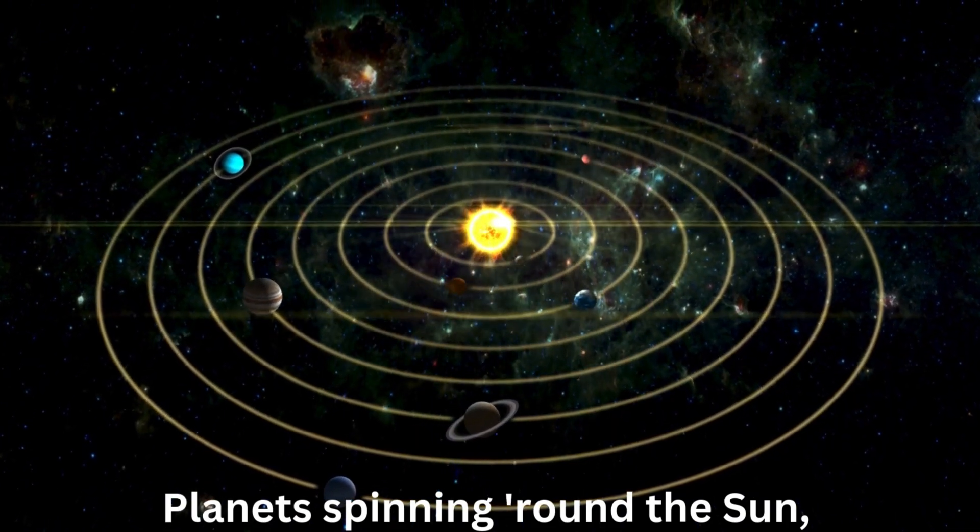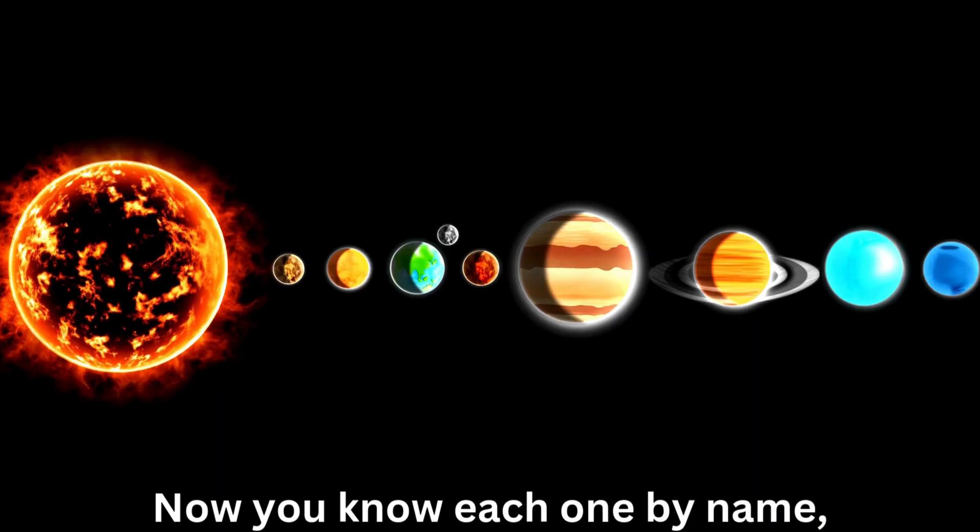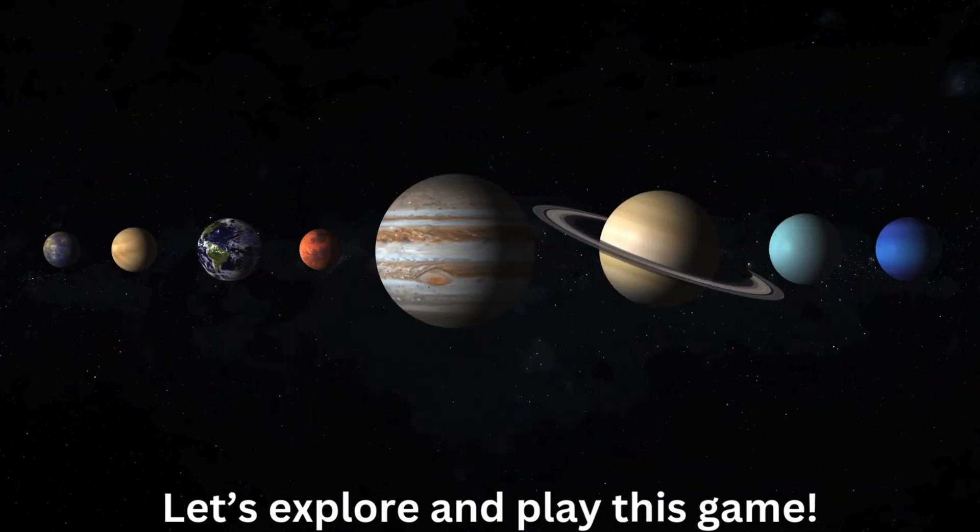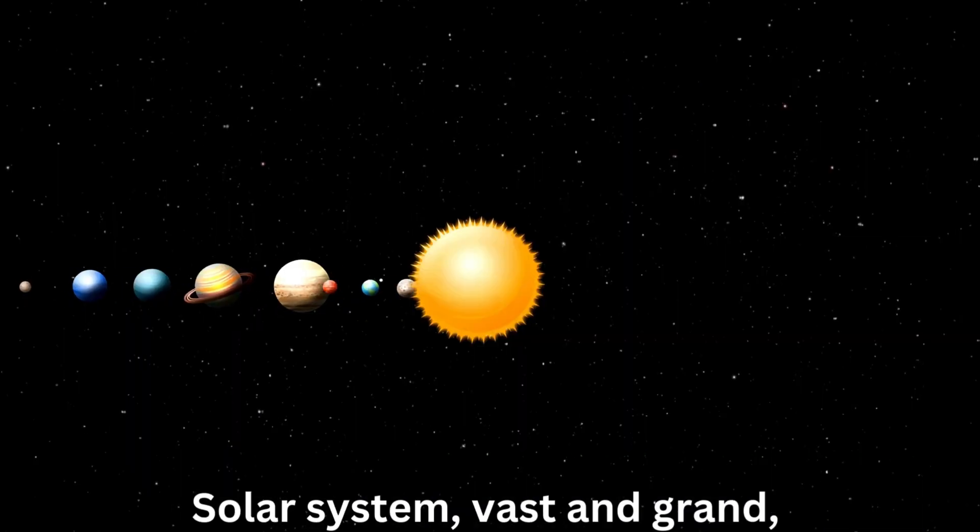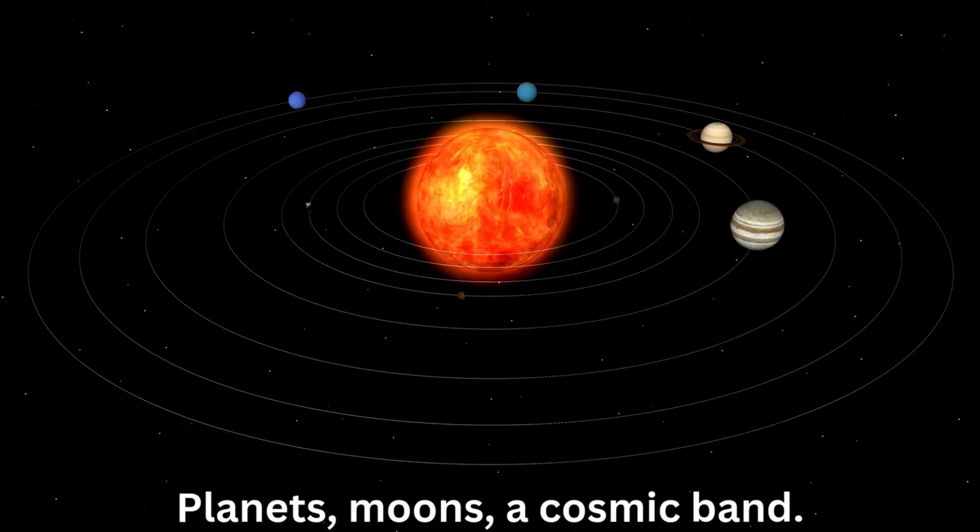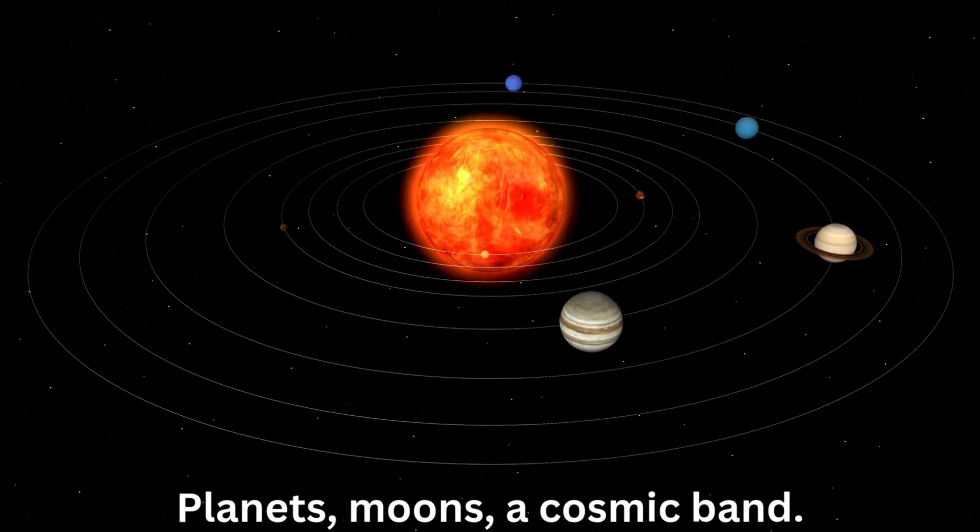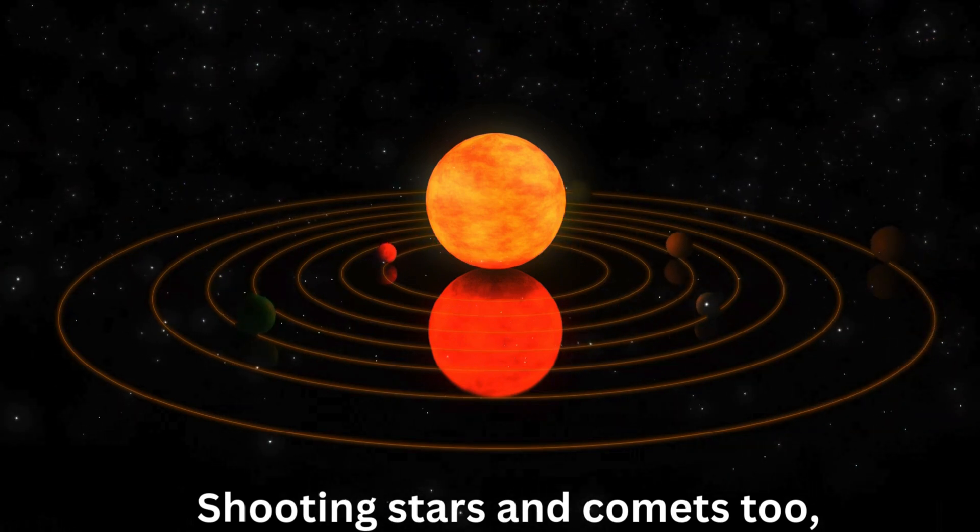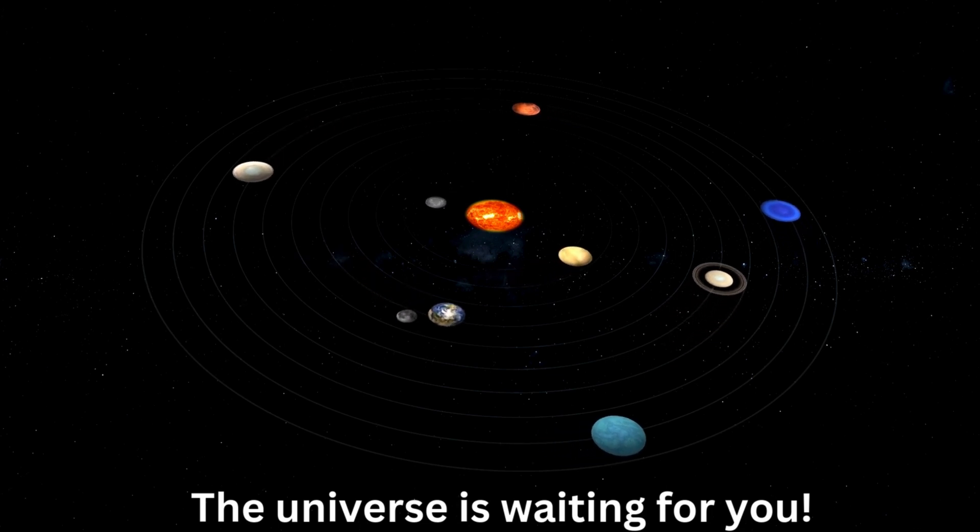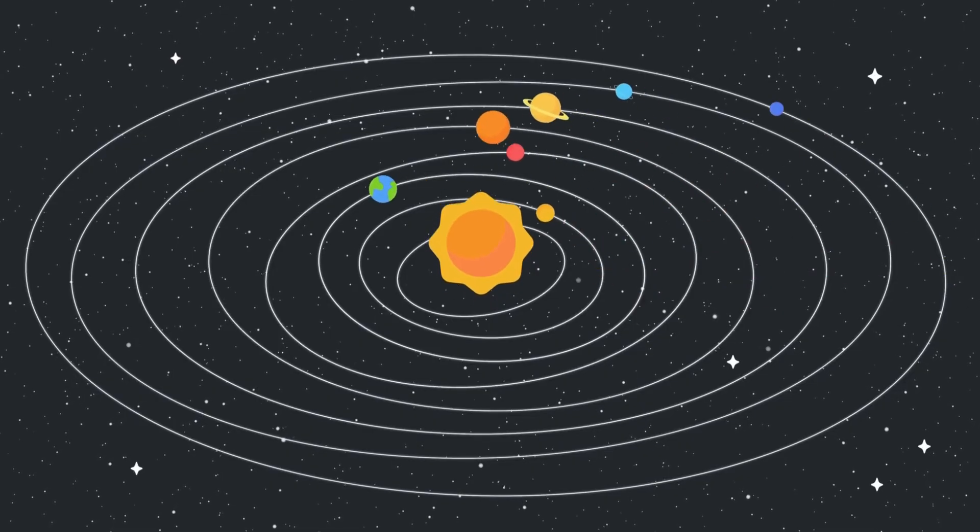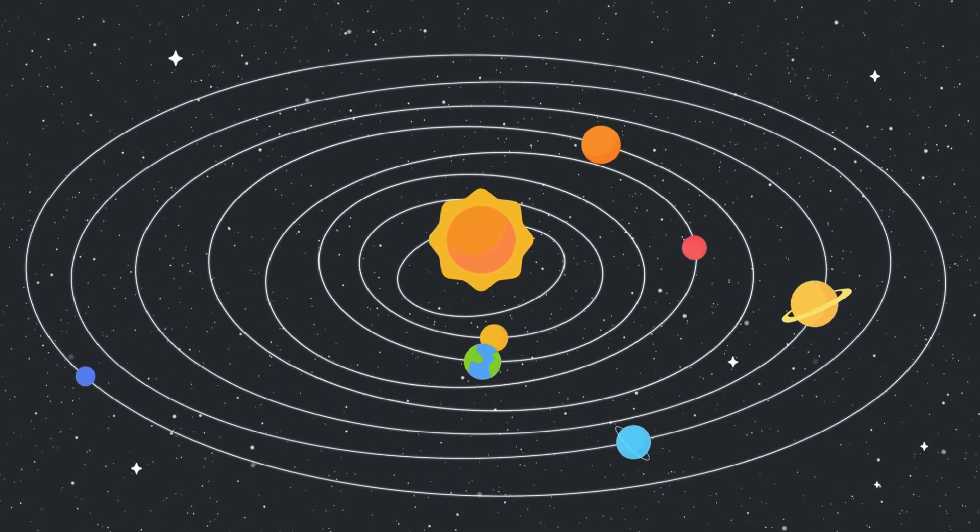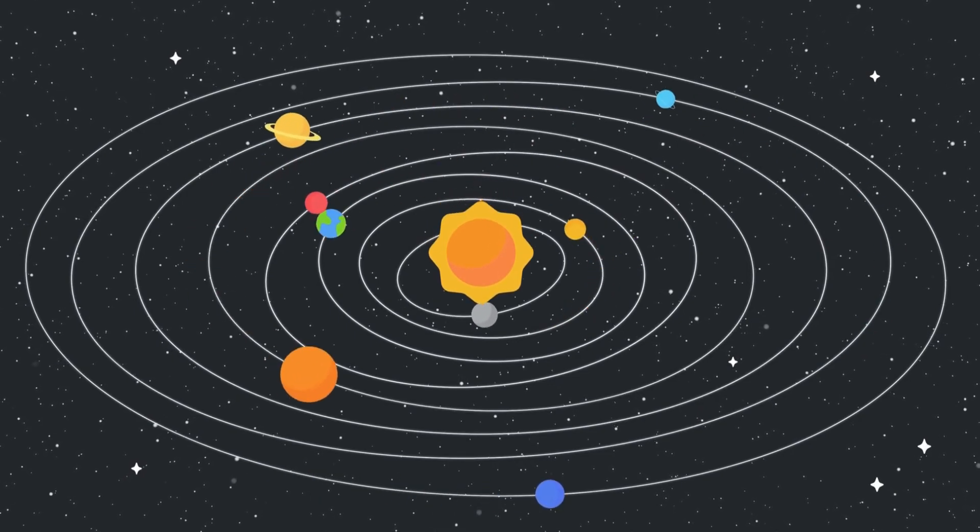Planets spinning round the sun, in the sky we're having fun. Now you know each one by name. Let's explore and play this game. Solar system, vast and grand. Planets, moons, a cosmic band. Shooting stars and comets too, the universe is waiting for you.